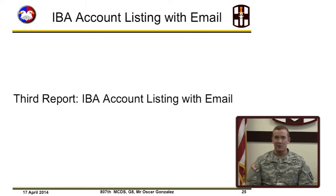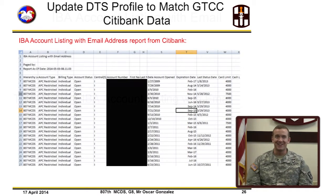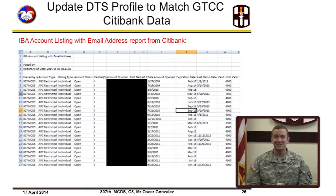The third report is the IBA account listing with email. This is an example of the Citibank IBA account listing with email address report. It is used to update email addresses and government travel card information in DTS.